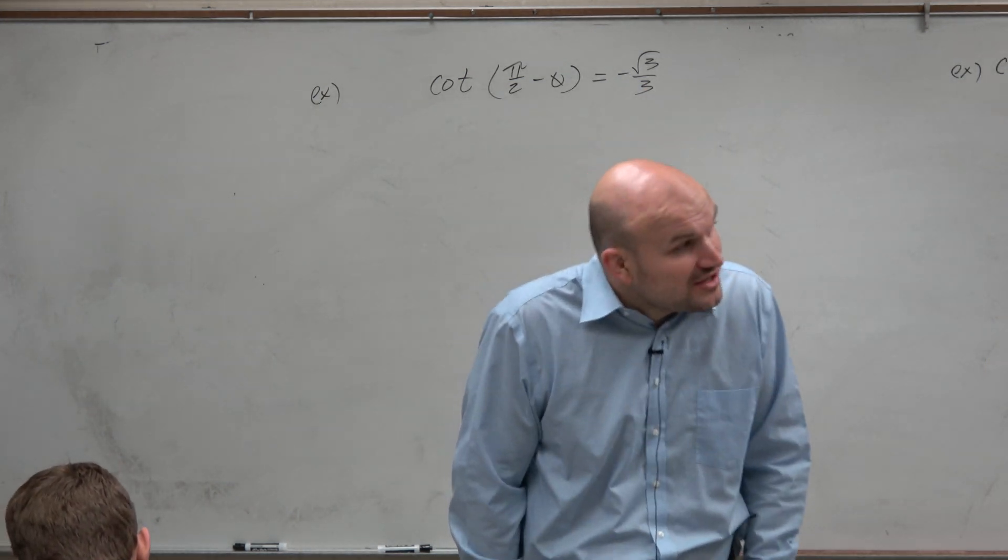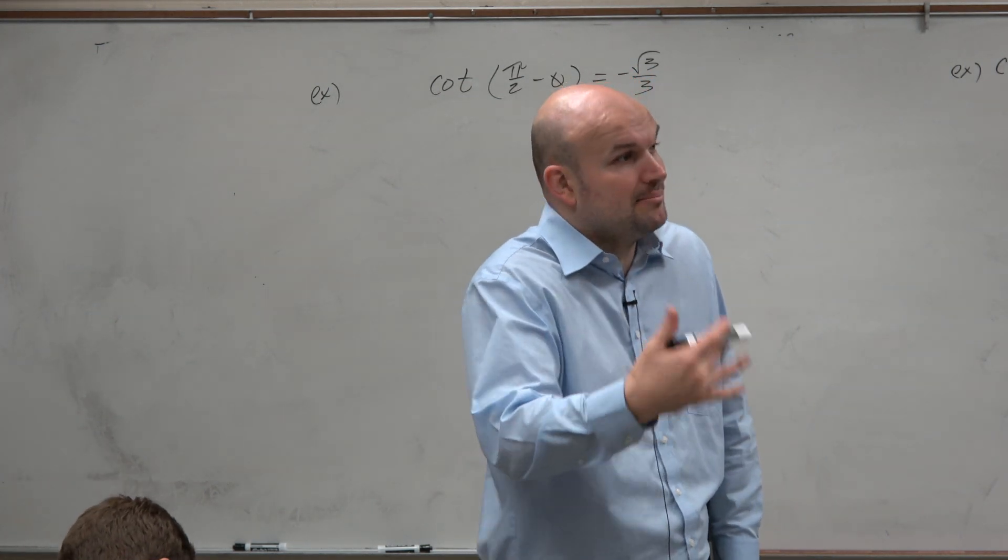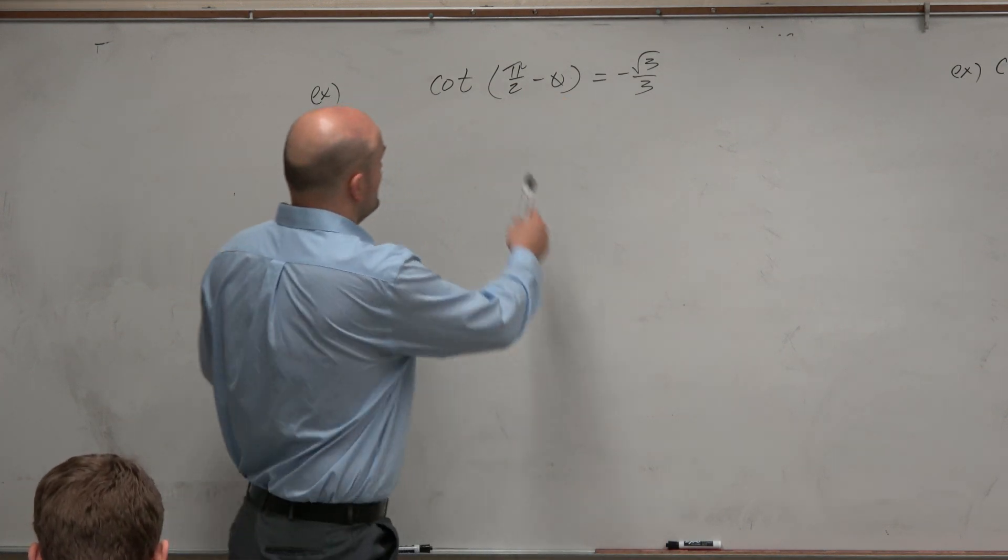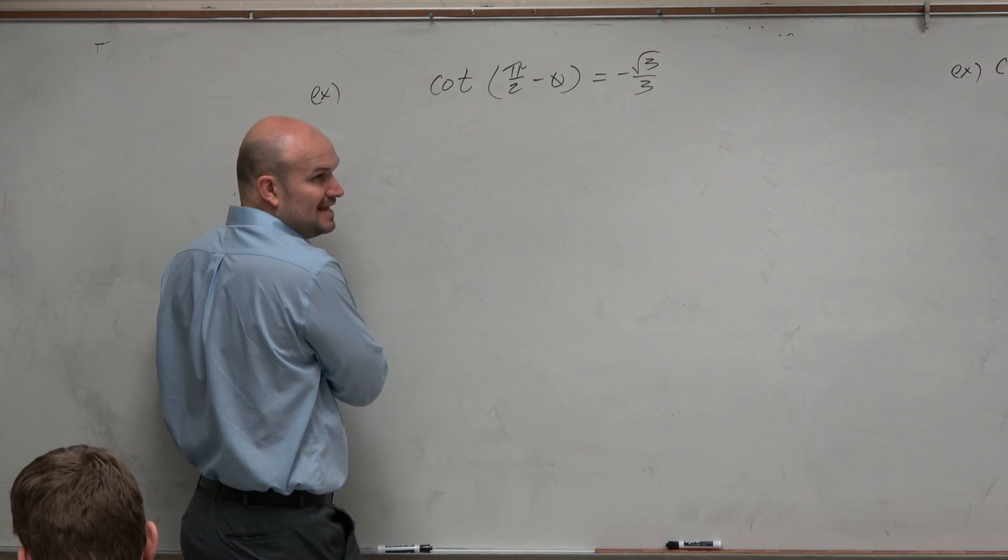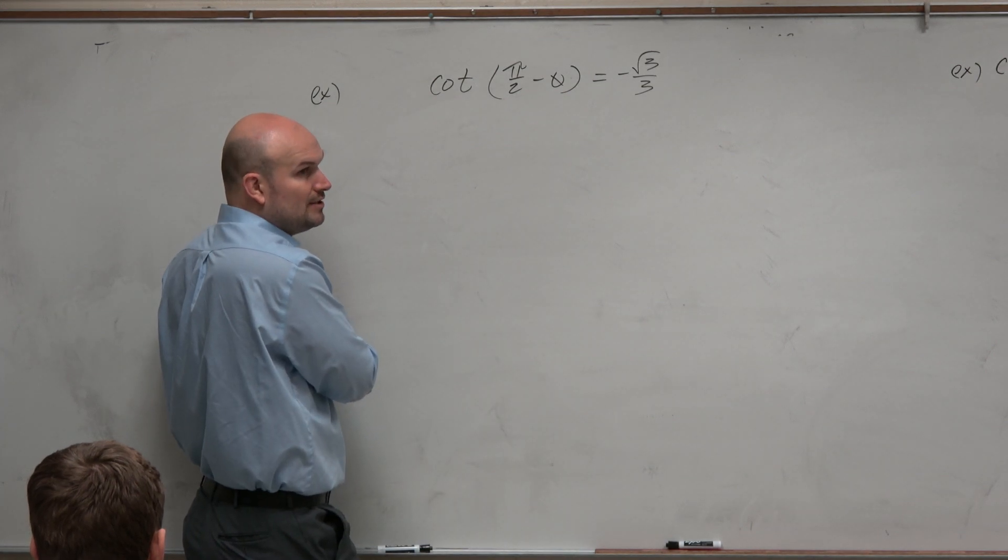So you guys should be fairly familiar to seeing identities and saying, oh, if I see a function that I can apply an identity, that's what I'm going to do. So here I have cotangent of pi over 2 minus theta, and I think that looks like my co-function identities that I had written on the board and in my notes.